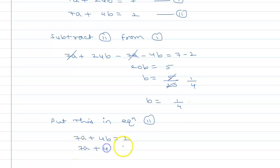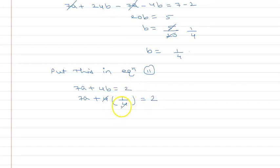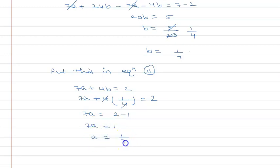Substituting b = 1 upon 4 back into 7a + 4b = 2: we get 7a + 4 × (1 upon 4) = 2. The 4s cancel, giving 7a + 1 = 2, so 7a = 2 − 1 = 1, therefore a = 1 upon 7.